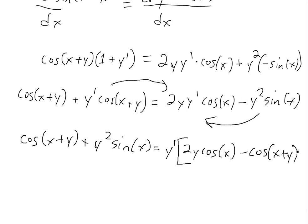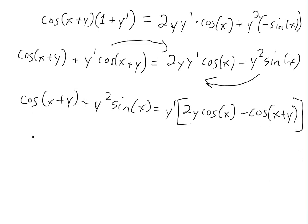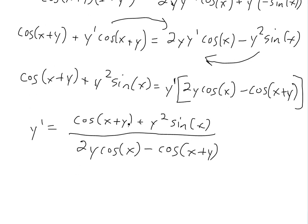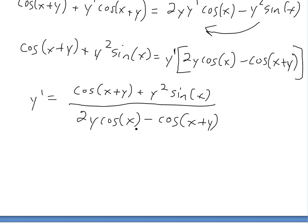Now we can solve for y prime by dividing this out to this side. So y prime equals this left side divided by this right side: cos of x plus y plus y squared sine x divided by 2y cos of x minus cos of x plus y. So we found a derivative implicitly in terms of x and the original function y. This makes things much easier than actually solving for y itself.